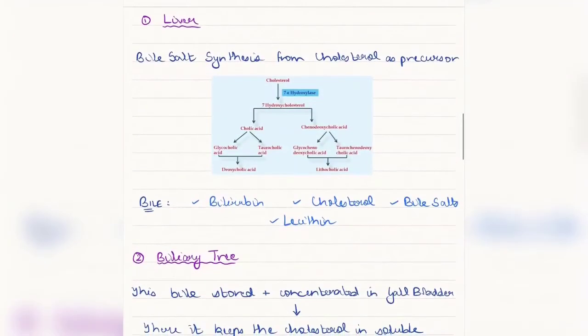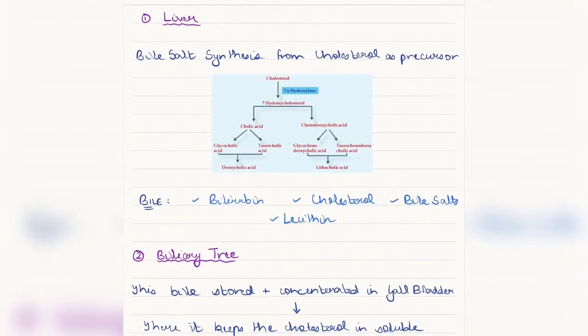This was all about the anatomy of the enterohepatic circulation. Next, coming to the physiological aspects of enterohepatic circulation. Again, I have divided this into four parts: the liver, biliary tree, intestine, and the portal circulation.